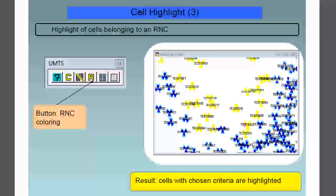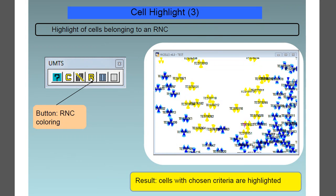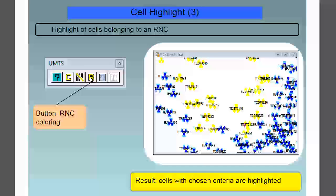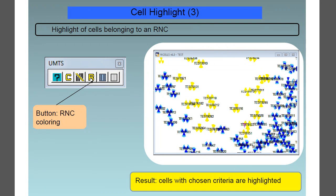On to the next feature, and that is the cell highlight, the highlight of the cells belonging to an RNC. You can see the results, which are the cells with the chosen criteria being highlighted.